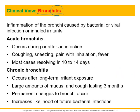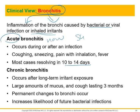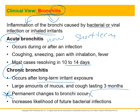Bronchitis — the suffix -itis means inflammation, and here we're talking about the bronchi. It's usually some sort of infection — bacterial or viral — or due to an inhaled chemical or irritant. Acute means short-term, and chronic means long-term exposure, with coughing lasting several months. Chronic bronchitis can cause permanent changes within the histology of the bronchi, which can increase the likelihood of future bacterial infections.